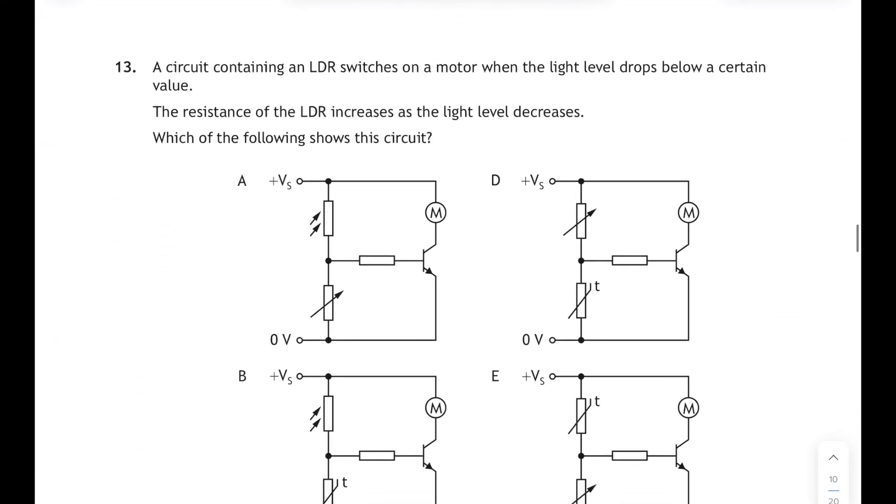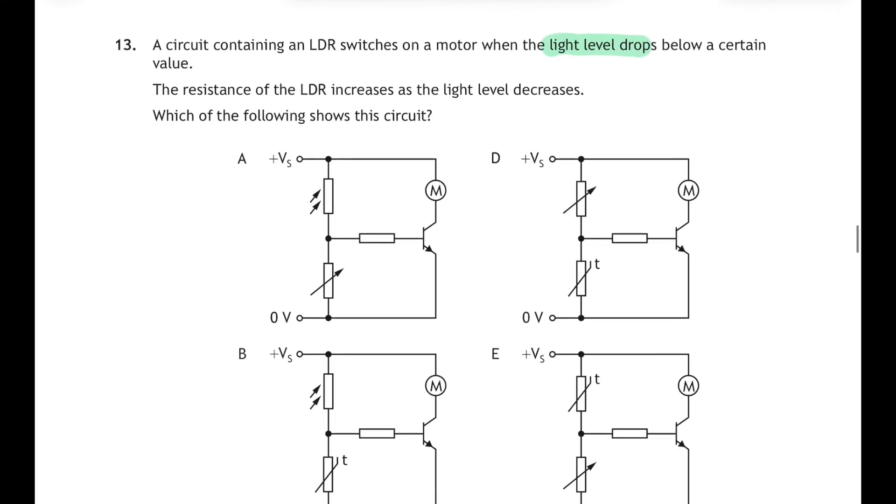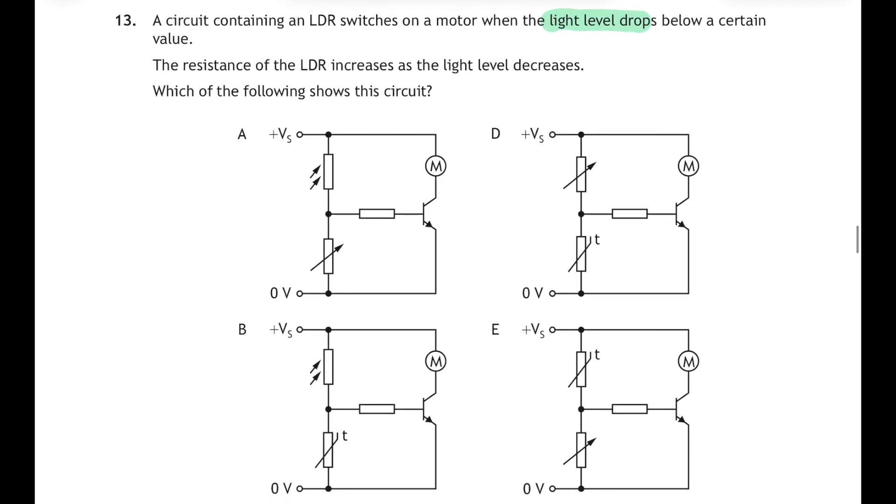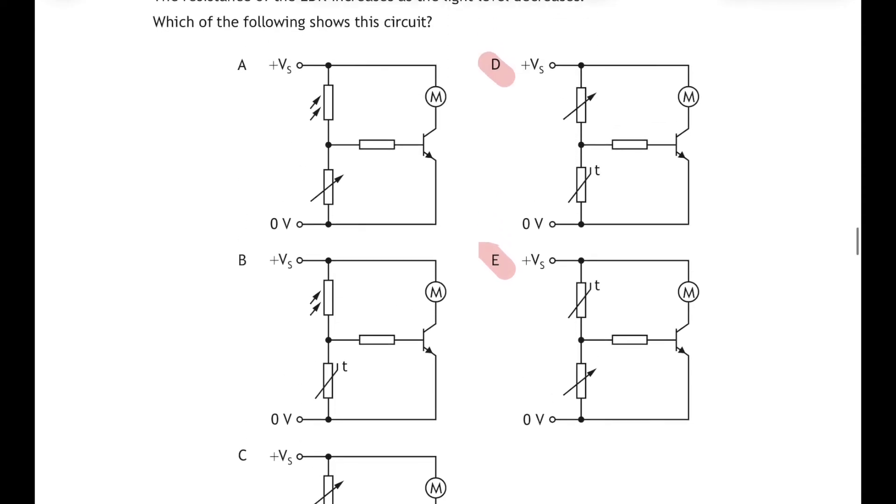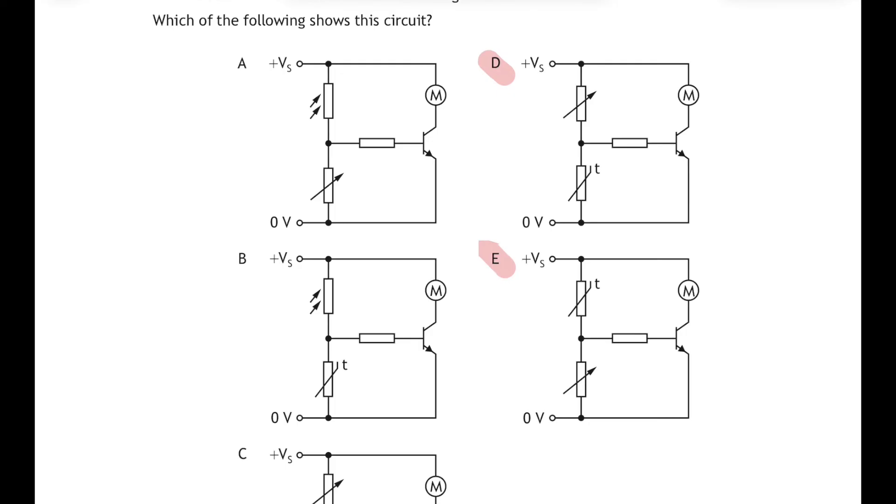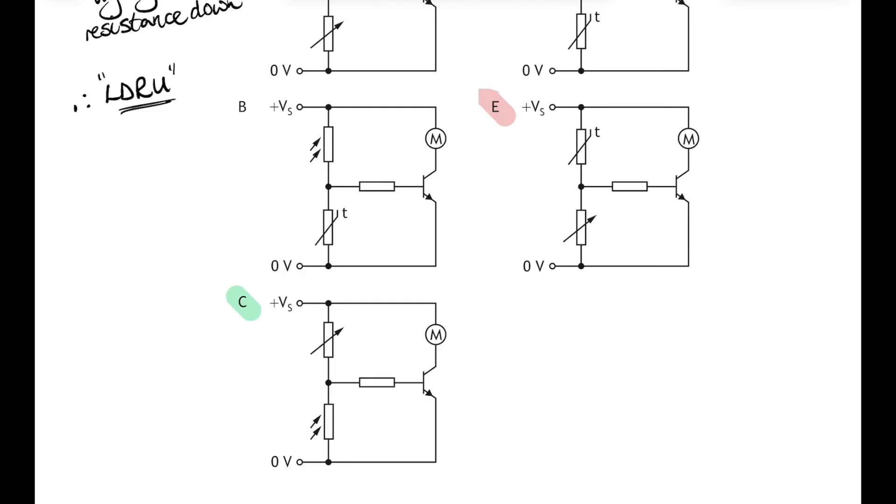Question 13: a circuit containing an LDR switch which is on a motor when the light level drops below a certain value, and the resistance of the LDR increases as light level decreases. So which of the following shows this circuit? So we're looking for a circuit that has got an LDR in it firstly. So D and E have both got thermistors in them, so let's chop them out. And then we're left with answer A, B, or C that have all got LDRs in them. Now you might remember TURD and LURD. So for an LDR, LURD, what does that mean? It means as the light level goes up, the resistance goes down. But in this question, it's the opposite of that: it's the light level going down, so the resistance is going up.